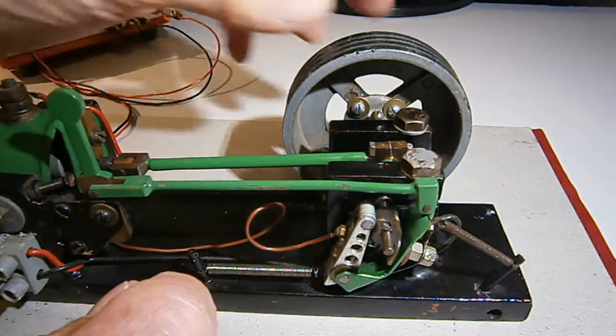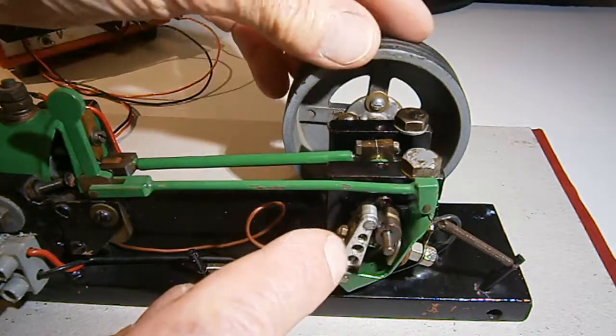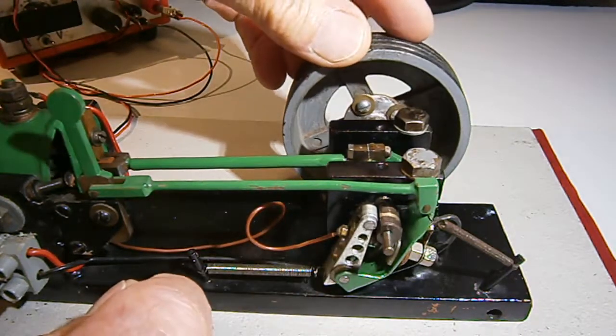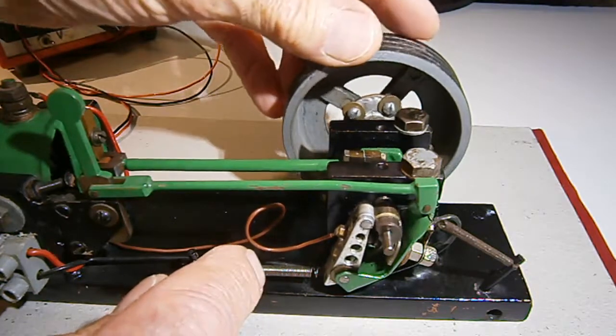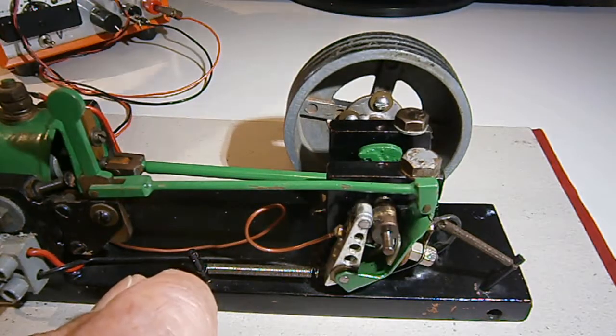At half throttle, say, it has to fall further down into the cam before the points close about there. But the points will open then, around about the same area, just before the top dead centre. And it works really well.